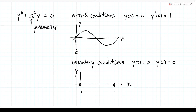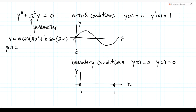The general solution of y'' + ω²y = 0 is y = a·cos(ωx) + b·sin(ωx). If we want y(0) = 0: cosine of 0 is 1, so y(0) = a, which must equal 0, so a = 0. We're left with only the sine part: y = b·sin(ωx).